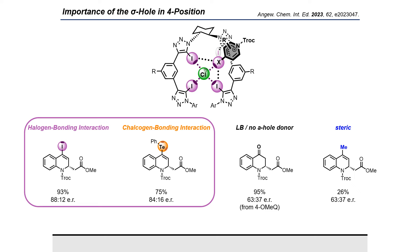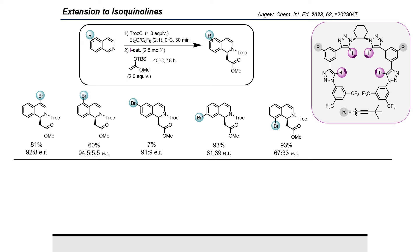We extended the scope to the isoquinolines. First, we looked again for the optimal position of the halogen at the core. For the isoquinolines, the five position is more suitable to obtain high enantioselectivities.